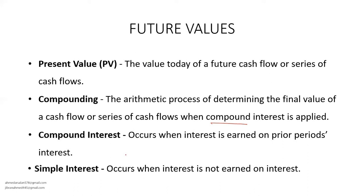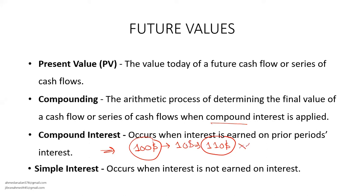Compound interest occurs when interest is earned on prior periods' interest. For example, you lent someone $100 and they need to pay you $10 as interest, so total payment is $110. But if you tell them to keep that $110 and pay you interest on that amount next time, next time they'll pay you interest of $11. So this is the compounding effect — the interest is increasing due to the increase in value. This process is known as compound interest.